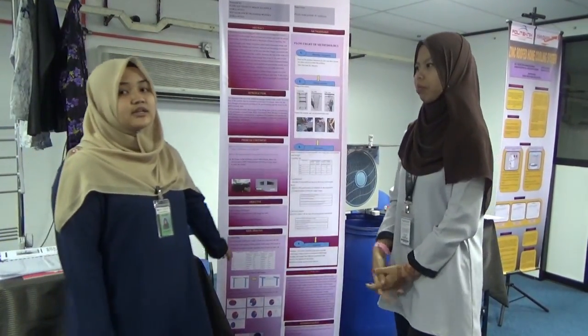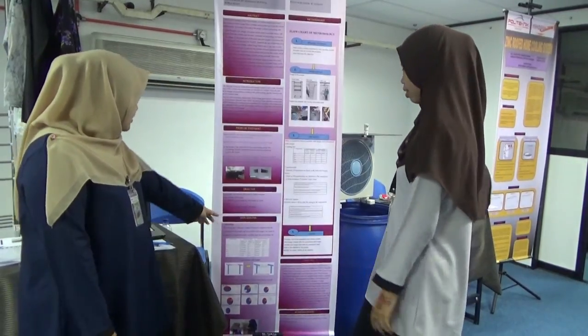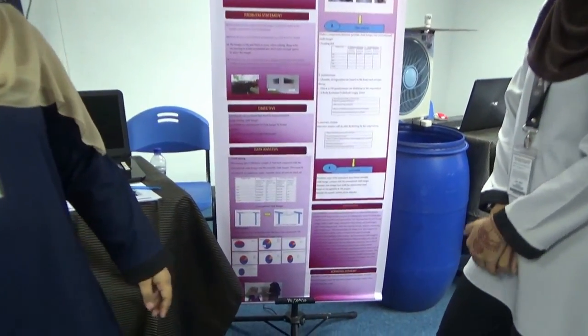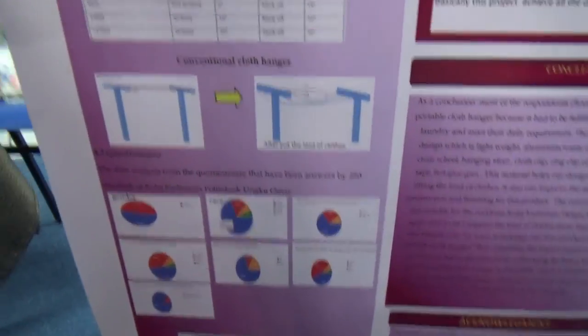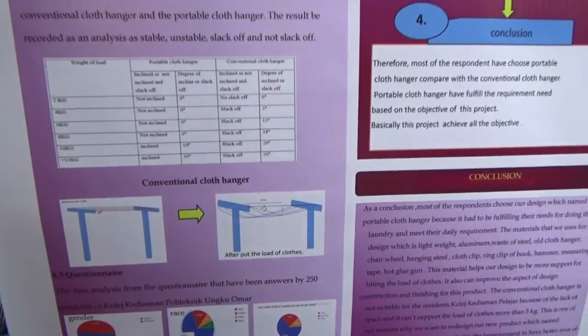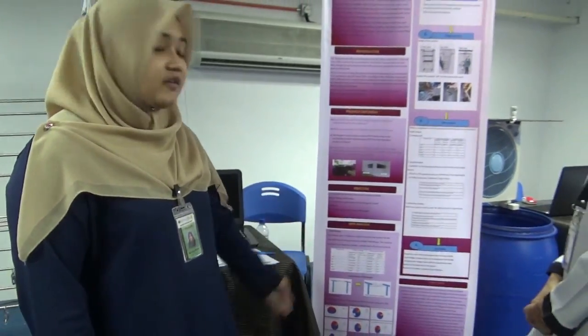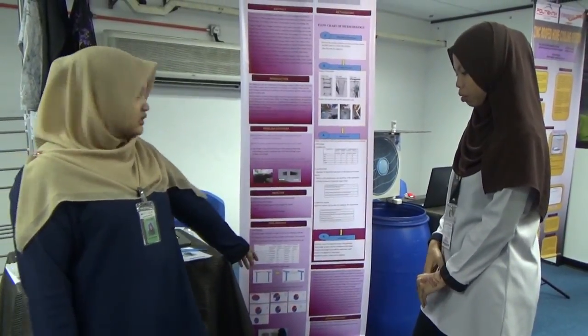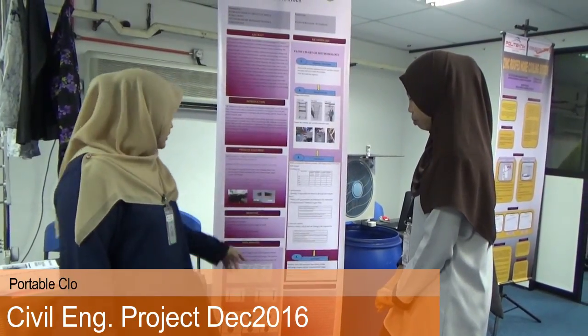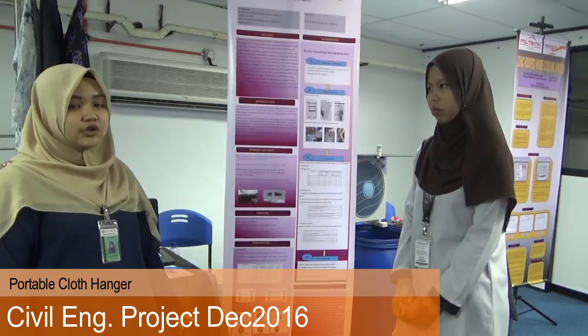Let me talk about data collection from the needs analysis. We used three parameters: loading test, questionnaire, and interview session. For the loading test, we tested five different weights of cloth. The portable cloth hanger had an inclination of 10 degrees at 10 kg, while the conventional cloth hanger had no inclination but showed slack at 4 kg at 5 degrees, with the slack increasing to over 50 degrees at 50 kg.